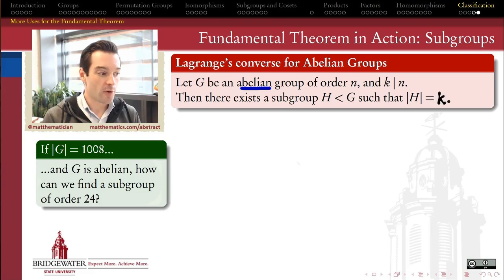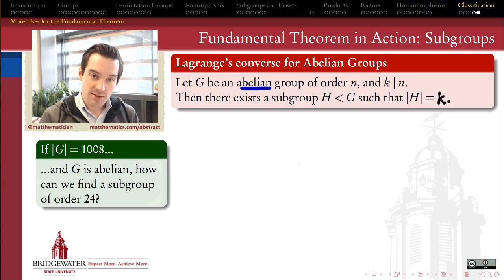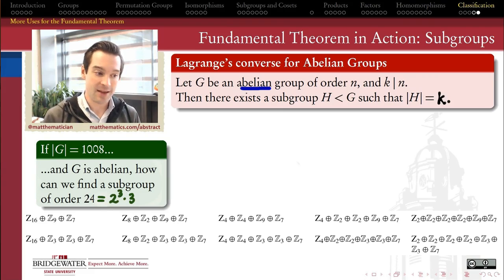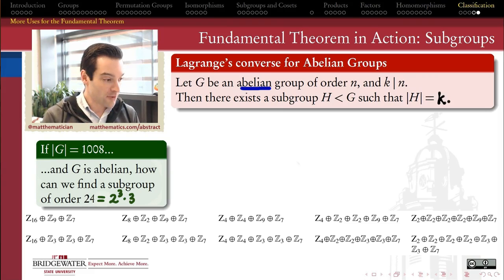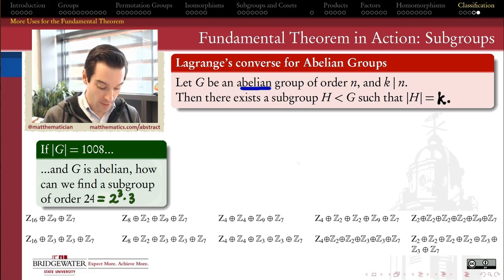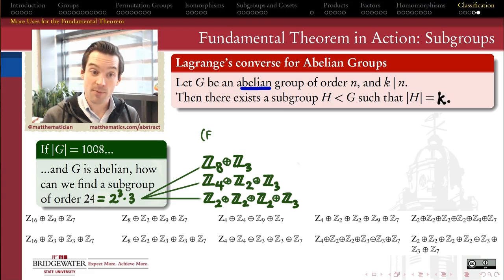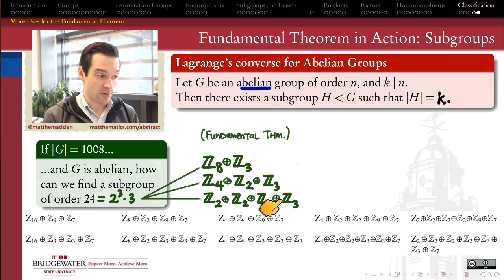Coming back to our groups of order 1008, how could we know that there does exist a subgroup of order 24? 24 happens to be a divisor of 1008. How do we know there's an order 24 subgroup in every single one of these 10 possibilities? Well, 24 is 2 to the 3rd power times 3, and we can apply the fundamental theorem of finite abelian groups to say that this subgroup of order 24, because it's abelian, must be isomorphic to one of these three possibilities: Z8 × Z3, or Z4 × Z2 × Z3, or Z2 × Z2 × Z2 × Z3.